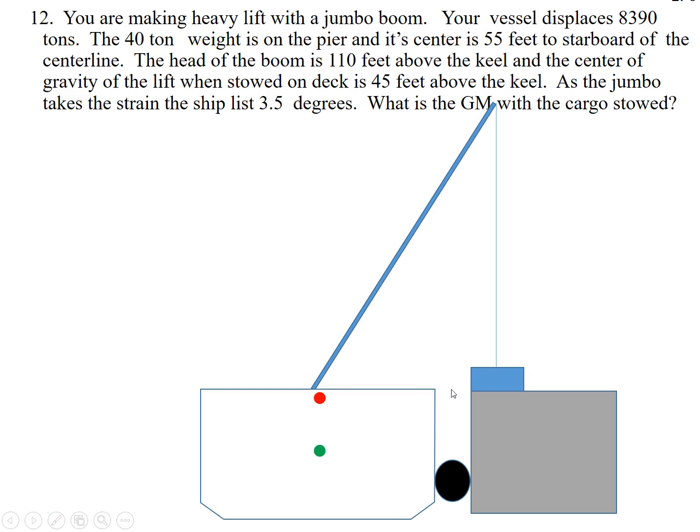So that's going to make G go up, but that weight is 55 feet off the center line. So not only is G going to go up because we're creating a moment here up at that height, but we're also going to be having an off-center weight. So G is going to shift up, and it's also going to shift laterally. So let's look at that.